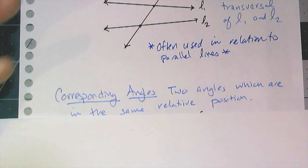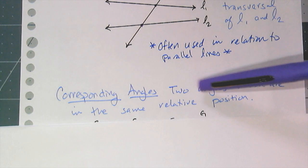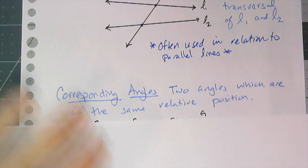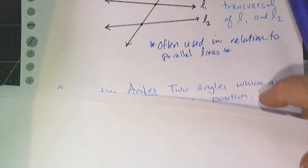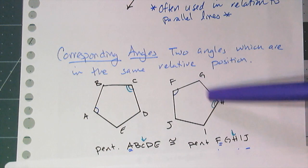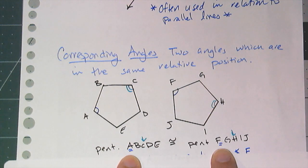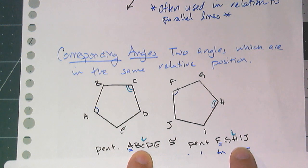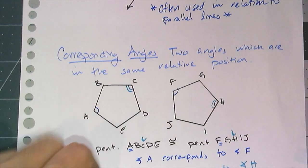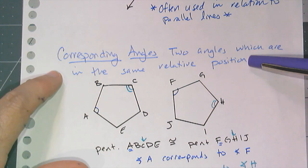Another vocabulary term that's not too new but is going to be important is corresponding angles. Corresponding angles are two angles which are in the same relative position. We've seen that with congruent figures. Like if pentagon ABCDE is congruent to pentagon FGHIJ, I know by the way they are named and marked that A corresponds to F — they match up, they're in the same relative position, first letter in the name. And angle C and angle H are corresponding angles because they are in the same relative position — third letter in the naming — and they are marked as congruent. The order of the letters matters when naming because of this whole correspondence issue.